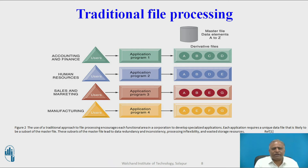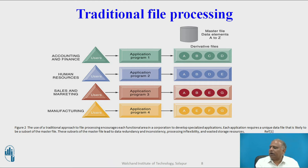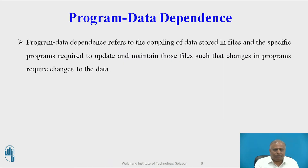This is the diagram of traditional file processing, where a separate file is used for manufacturing, a separate file for sales and marketing, separate files for human resources, and separate files for accounting and finance — all stored in the master file. The use of the traditional file processing approach encourages each functional area to develop special applications, and each application requires a unique data file that is likely to be a subset of the master file. These subsets lead to data redundancy, inconsistency, inflexibility, and waste of storage resources.